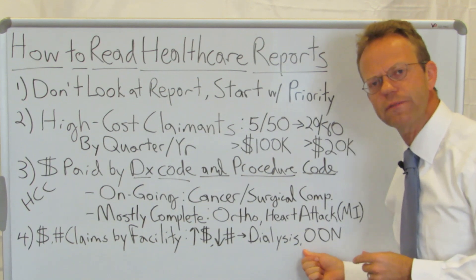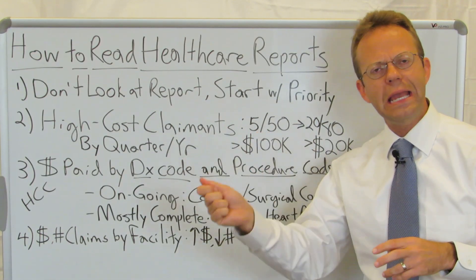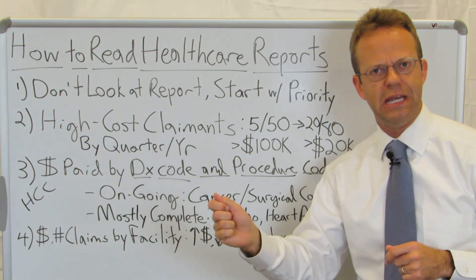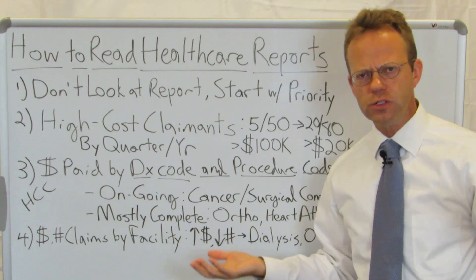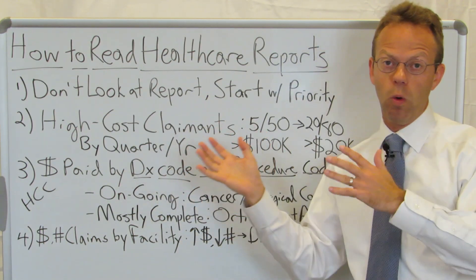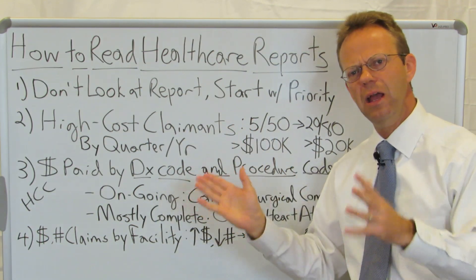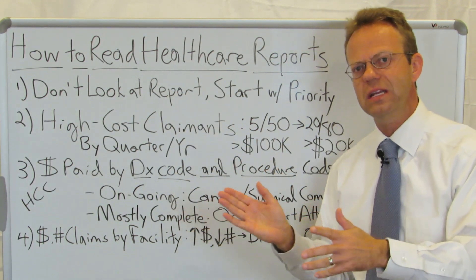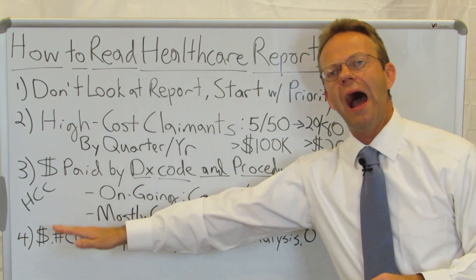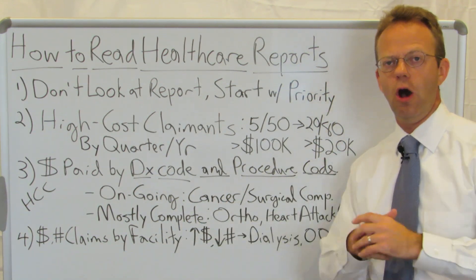Also look at out-of-network facilities. I worked with another employer that had all these claims for orthopedics at an out-of-network surgery center — and they were huge bills. You may like the surgeon, but what can you do in terms of plan design, network design, or client-specific networks to steer people away from that facility? You want to look for high dollar spend with just a handful of claims — that's the low-hanging fruit on the facility side.